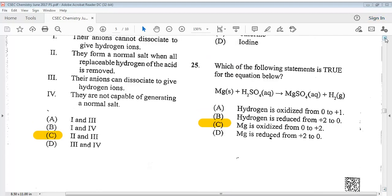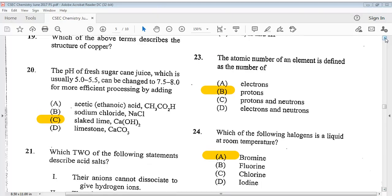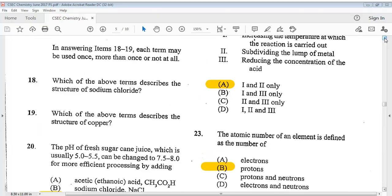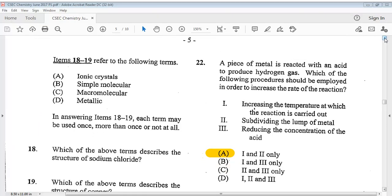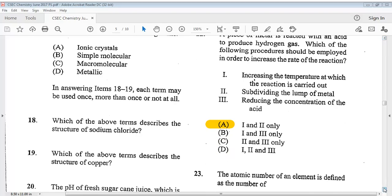Let's go on to our next question, question 22. It says, a piece of metal is reacted with an acid to produce hydrogen gas. Which of the following procedures should be employed in order to increase the rate of the reaction? 1, increasing the temperature at which the reaction is carried out. 2, subdividing the lump of metal. 3, reducing the concentration of the acid. The answer is A, 1 and 2 only.